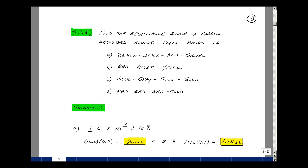We have a set of resistors and their color codes are as follows: brown, black, red, silver; red, violet, yellow; blue, gray, gold, gold; and red, red, red, gold.